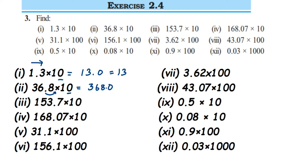The third one: 153.7 multiplied by 10. Again, we have only one zero, so the decimal point moves one digit to the right side. This will become 1537.0. The next one: 168.07 multiplied by 10. The decimal moves one digit to the right side, so this will become 1680.7.